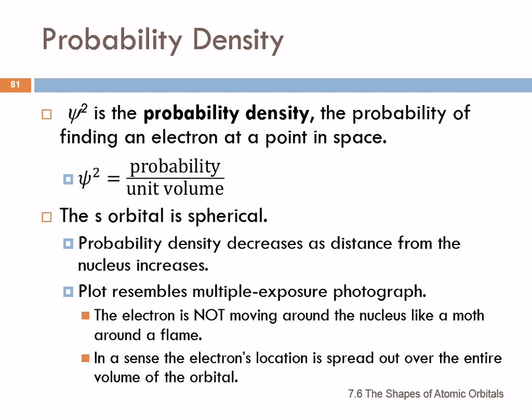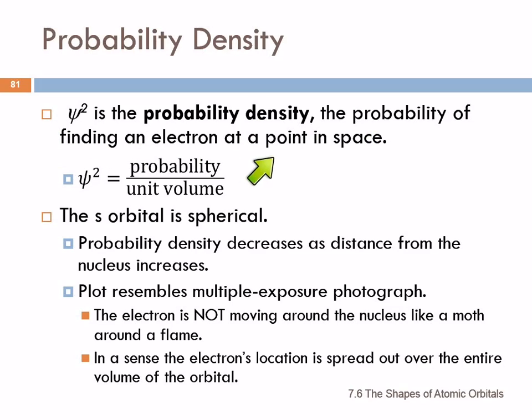Probability density. So we said that psi was a wave function, and wave functions are the solutions to the Schrodinger equation. Psi squared, then, is the probability density, which is the probability of finding an electron at a point in space. So it's the probability divided by the unit volume.